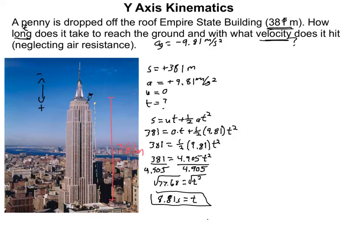You can always assume the acceleration of gravity, negative 9.81, actually is negative 9.8100 — from there on out, even though in reality it's not. If you were doing an experiment you wouldn't want to assume that, but in problems you may assume that. So I come up with my time, 8.81 seconds for the penny to fall all the way from the top of the Empire State Building down to the ground 381 meters. Also notice, 0 times T is 0, so that term completely goes away when working the algebra.